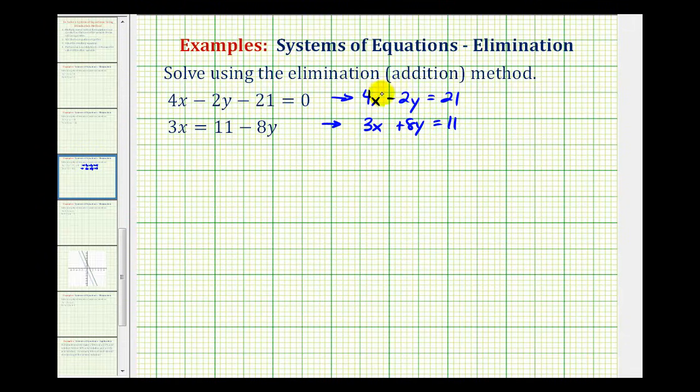If we add the two equations together now, neither of the variable terms are opposites. So we have to decide whether we want to eliminate the x terms or the y terms. Looking at the x terms, we have 4x and 3x. The least common multiple of 3 and 4 would be 12, so one of these terms would have to be negative 12x and the other would have to be positive 12x. To do that, notice how we'd have to multiply both the first and second equation by a constant.